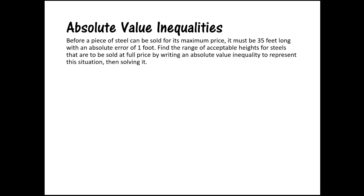The first thing you always want to do is go ahead and read through the problem — we have to know what we're tackling. So: before a piece of steel can be sold for its maximum price, it must be 35 feet long with an absolute error of one foot. Find the range of acceptable heights for steel to be sold at full price by writing an absolute value inequality to represent this situation, then solving it.